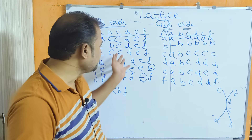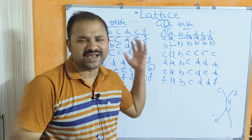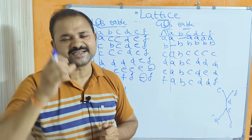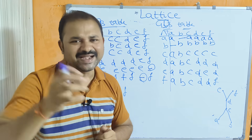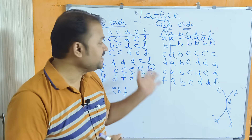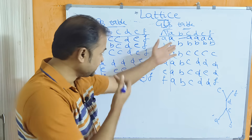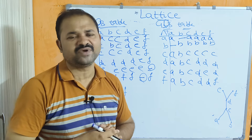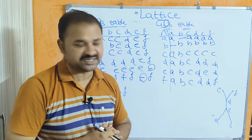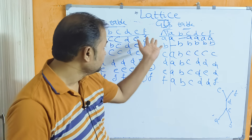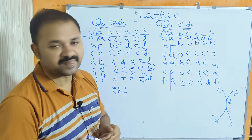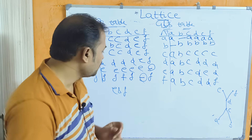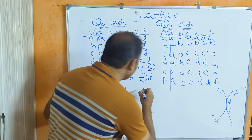In the LUB table, the entries for E,F and F,E do not exist. In the GLB table, the entries for A,B and B,A do not exist. Since for these cells we don't have both LUB and GLB, we can say that this Hasse diagram is not a lattice.